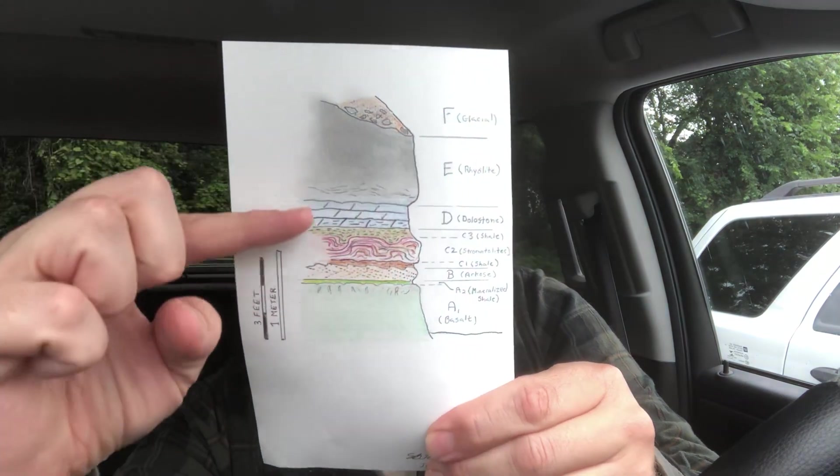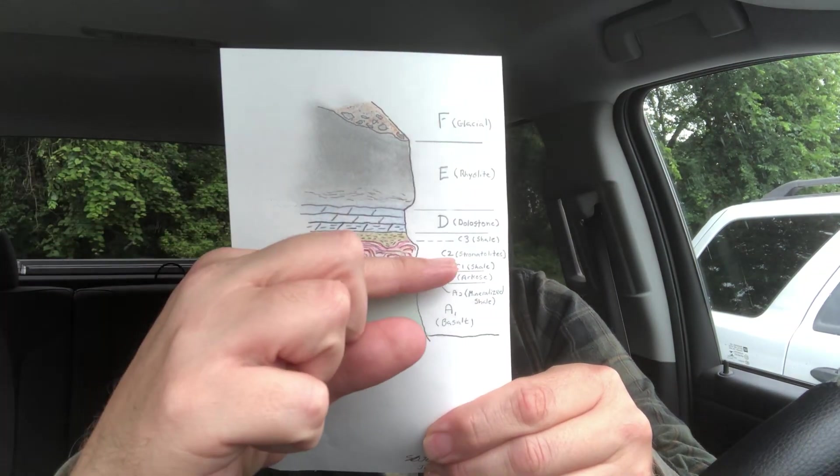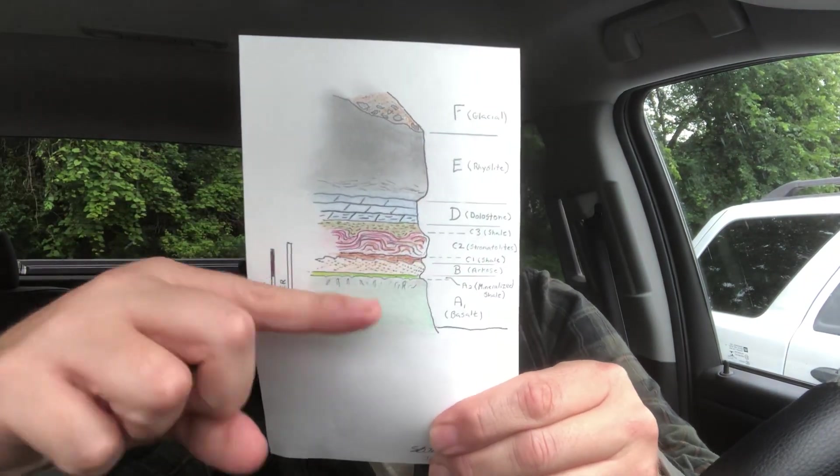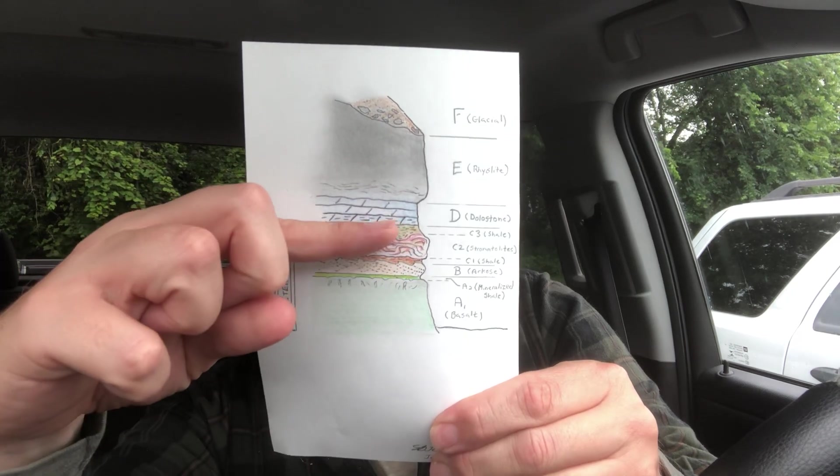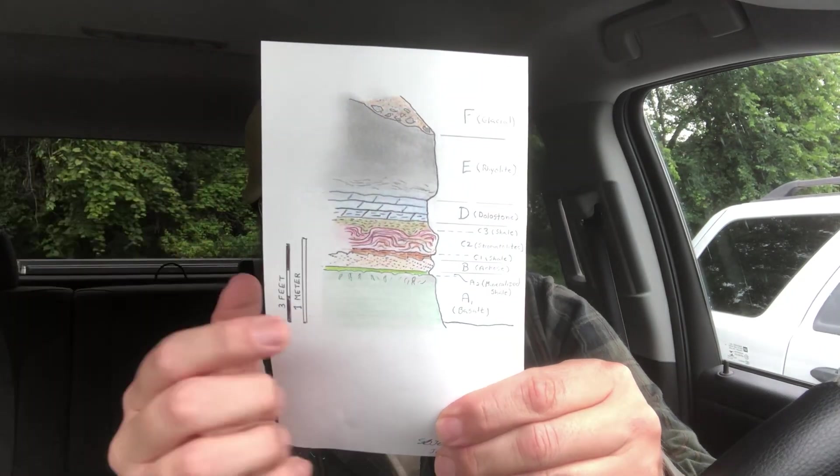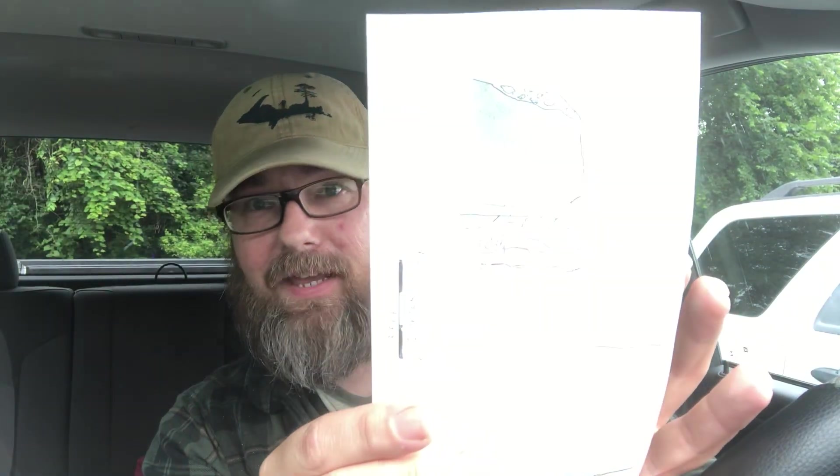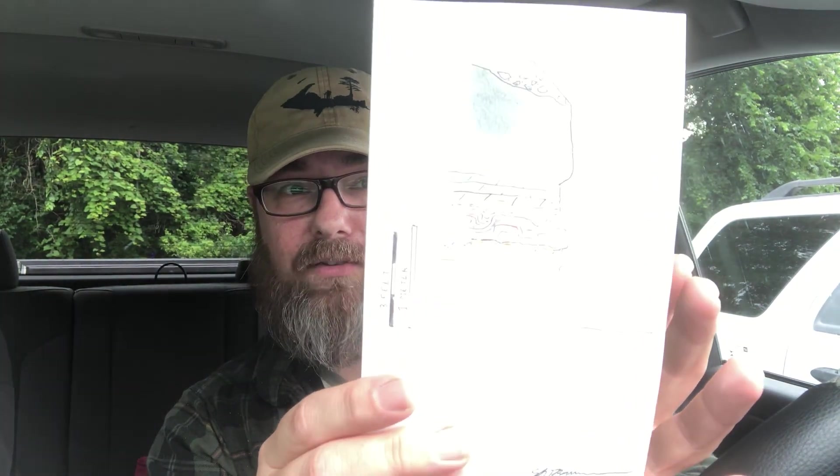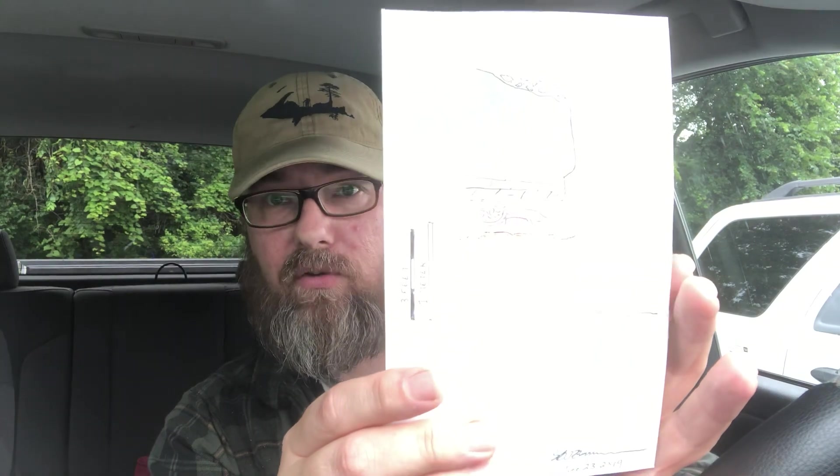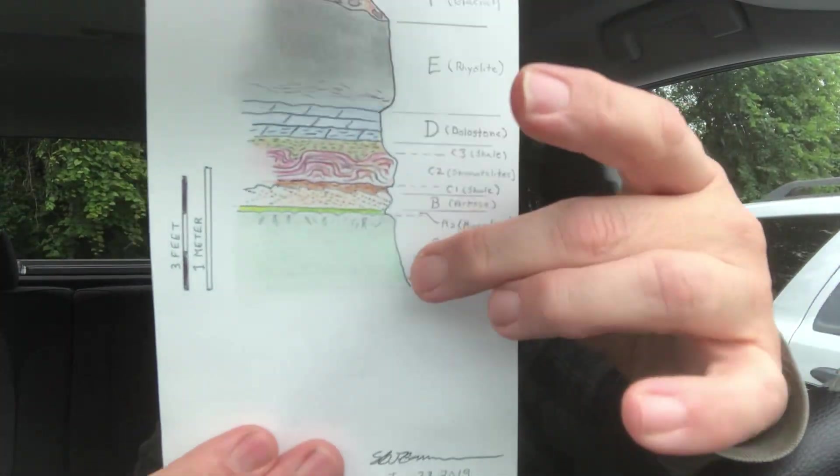You're going to look for things that would indicate which way is up in the sequence. Was it deposited this way or was it deposited this way? And another question: do these intrude your sedimentary package or is this a lava flow that was deposited? See how complicated this is becoming?